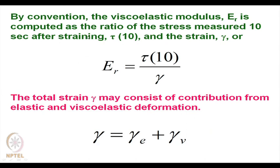For a viscoelastic material combining elastic and viscous elements in parallel (Voigt model), the stress required to maintain a fixed strain depends on the rate of deformation. The stress reaches a constant value as the desired strain is achieved, and the system is not associated with a relaxation effect. By convention, the viscoelastic modulus E_R is computed as the ratio of stress measured at 10 seconds after straining (tau₁₀) to the strain gamma. The total strain gamma consists of contributions from both the elastic component gamma_E and the viscous component gamma_V.